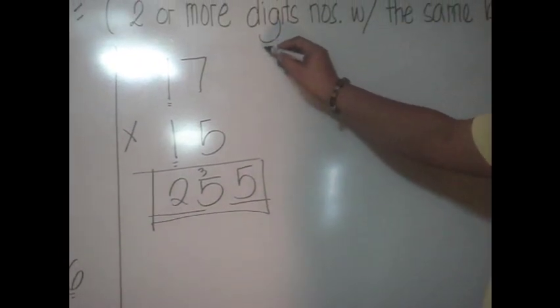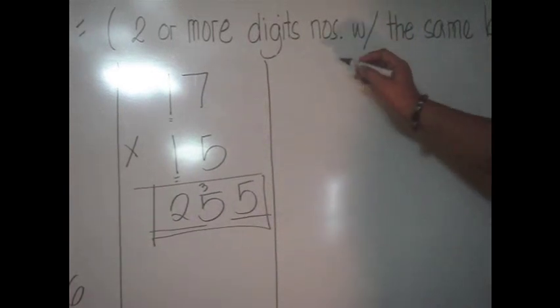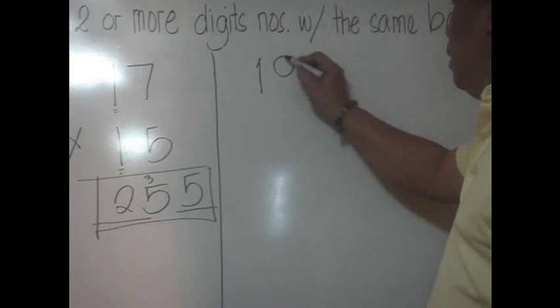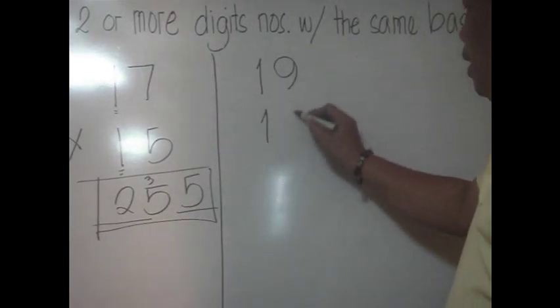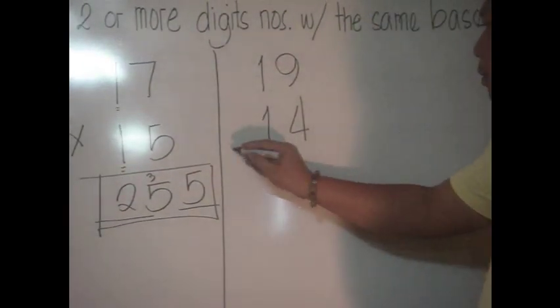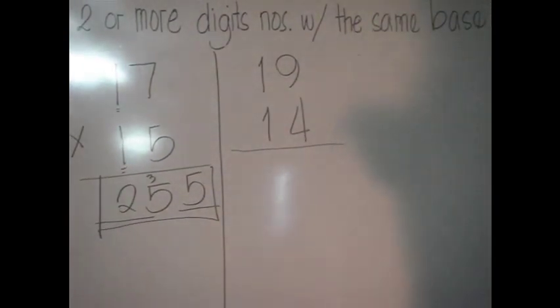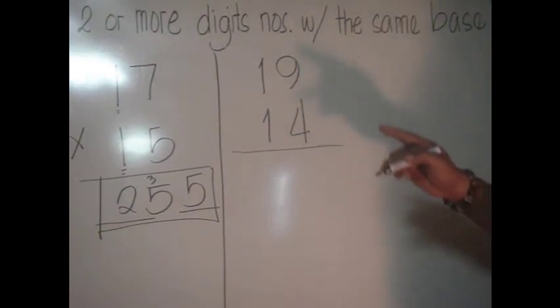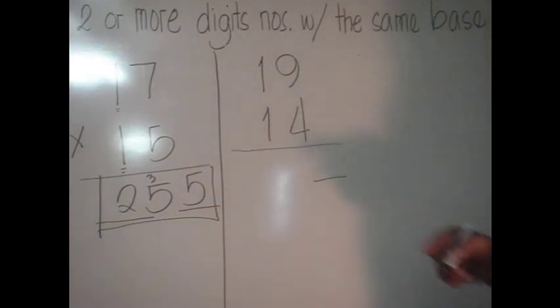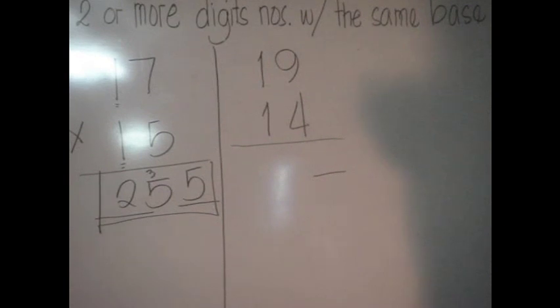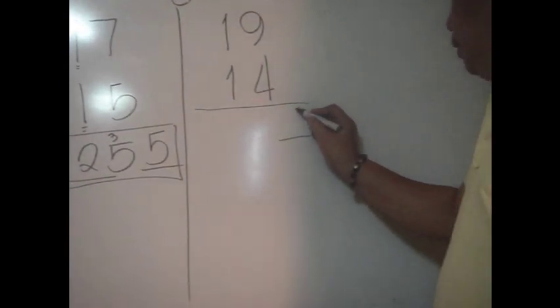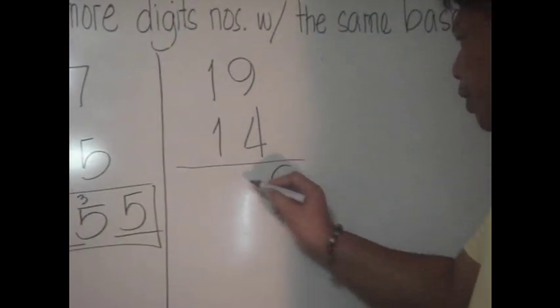Another example. For example, you have 14 times 19. Okay, this time we get fast, a little bit faster. Without the writing, go directly to the answer. First thing to do, you get one digit by multiplying the last digits of these two numbers. Multiplying 4 with 9, the answer is 36. And 36, take the last digit 6 with 3 carried.